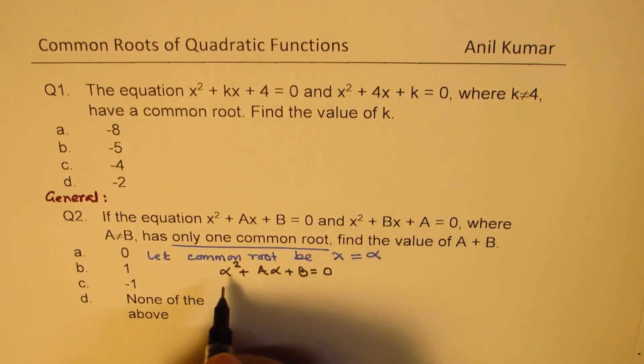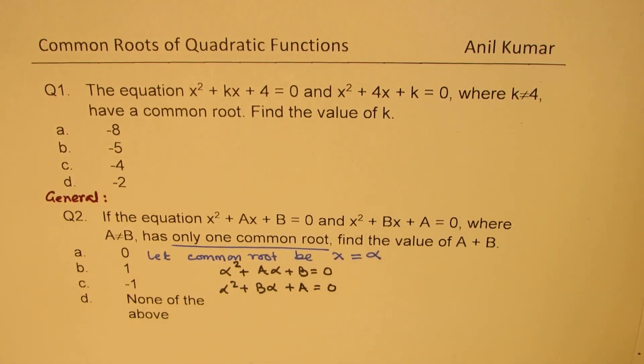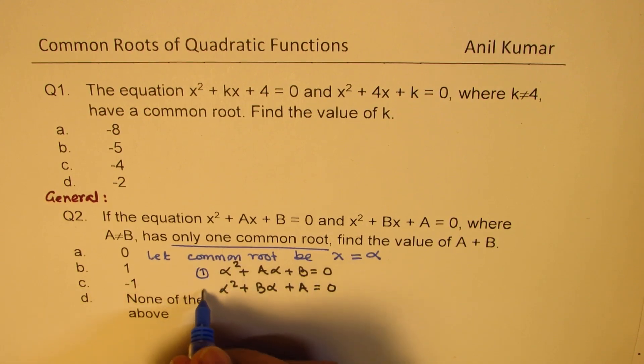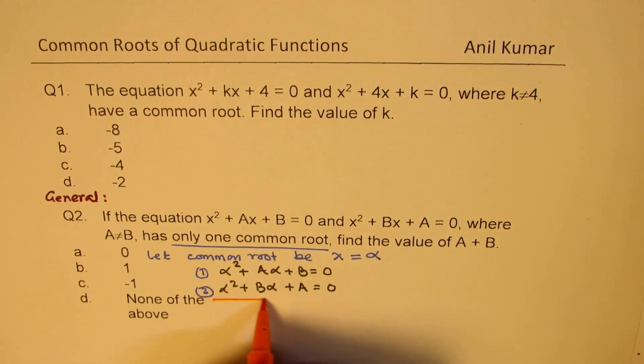And the second one will become α² + bα + a = 0. So we will get these two equations, correct? Equation 1 and equation 2. Now see what happens when we take away one from the other.